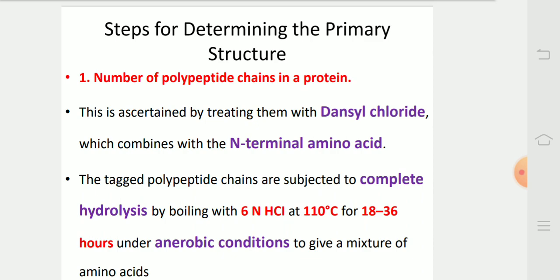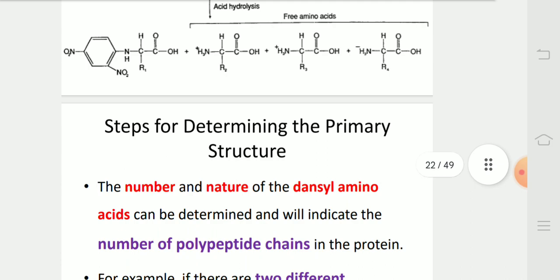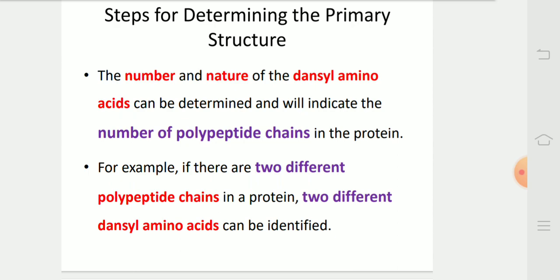Now, first, the steps for determining the primary structure. Number one: determination of the number of polypeptide chains in a protein. This is ascertained by treating them with dansyl chloride, which combines with the N-terminal amino acid. The tagged polypeptide chains are subjected to complete hydrolysis by boiling with 6 N HCl at 110°C for 18-36 hours under anaerobic conditions to give a mixture of amino acids. In this diagram, we can see that N-terminal binds to DF and B.